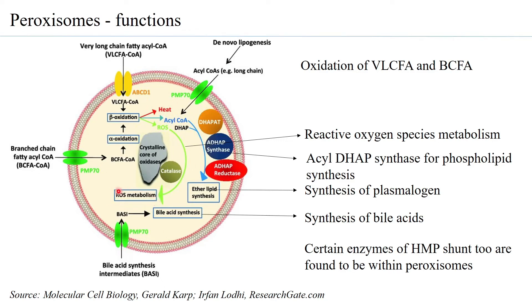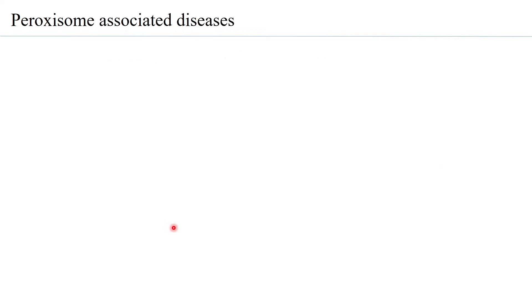From this, one can understand that multiple different types of pathways operate inside the peroxisome due to the presence of many different enzymes. Consequently, if any of these enzymes are not functioning properly, or if the peroxisome itself is not functioning properly, diseases associated with peroxisomes can arise. Two such diseases are particularly well known.